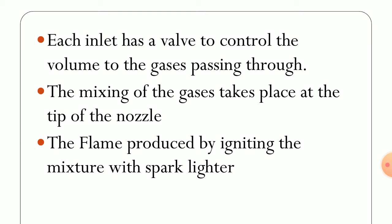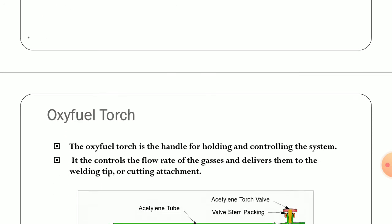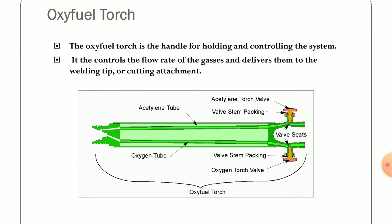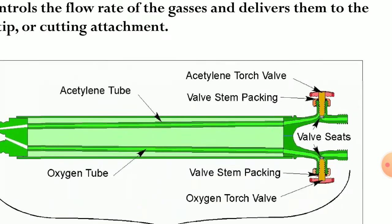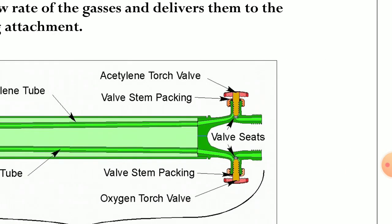The flame is produced by igniting the mixture using a spark lighter. This picture represents the oxy-fuel torch wherein you can observe the acetylene torch valve, wall stem packing, and similarly the oxygen torch valve and packing. This packing is essentially required since these gases should not be exposed to air or the surrounding environment.